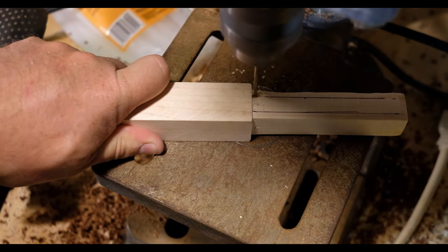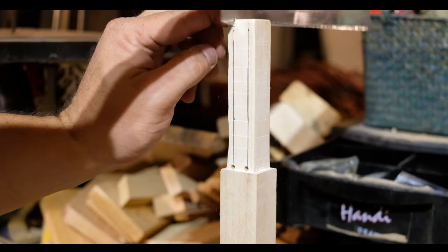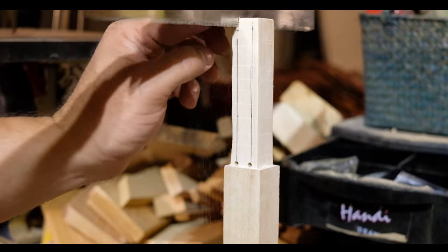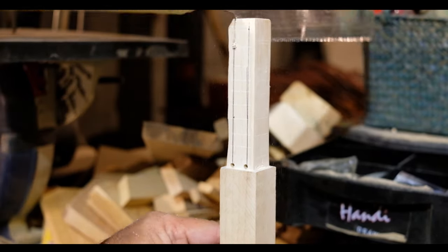I used a wedged tenon to lock the handle in place, so I drilled two relief holes at the base of the tenon and then cut channels for the wedges. I used a Japanese pull saw because of the thin kerf, and to get more practice cutting straight.